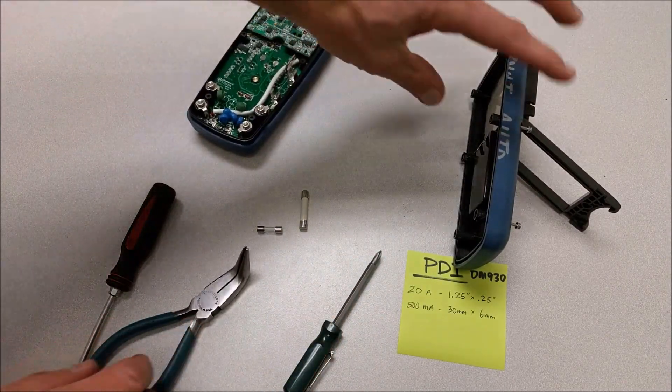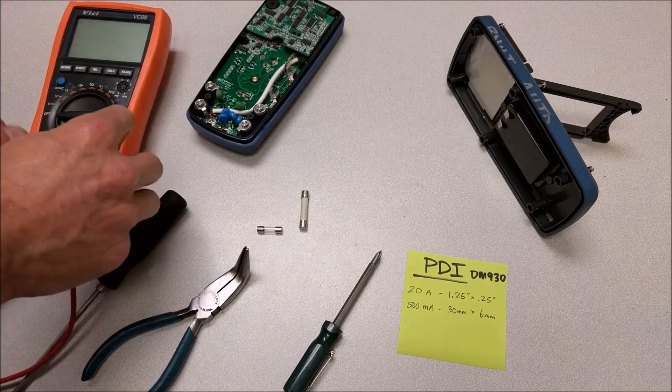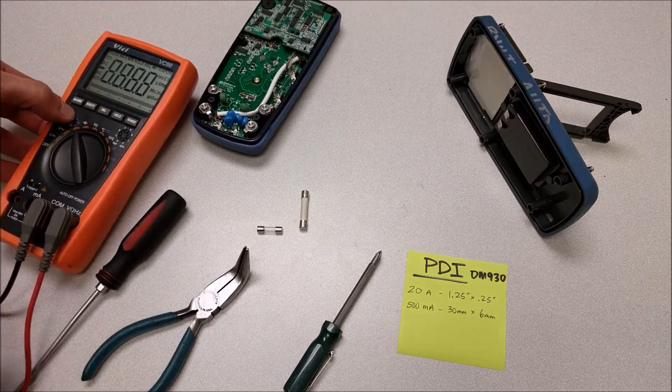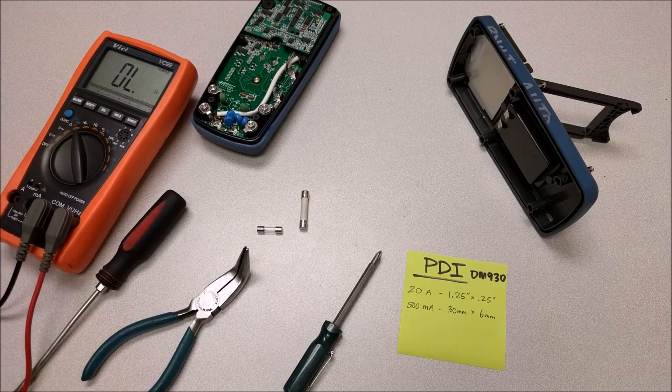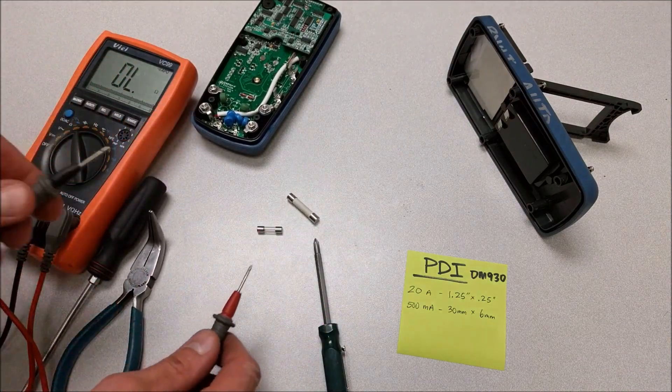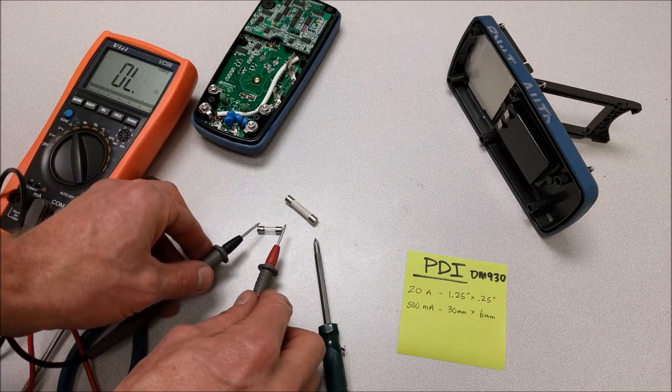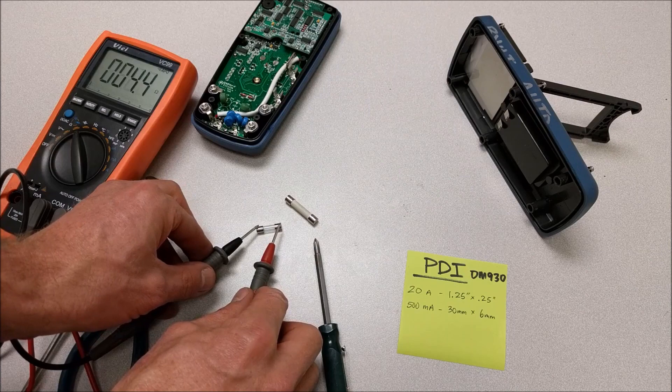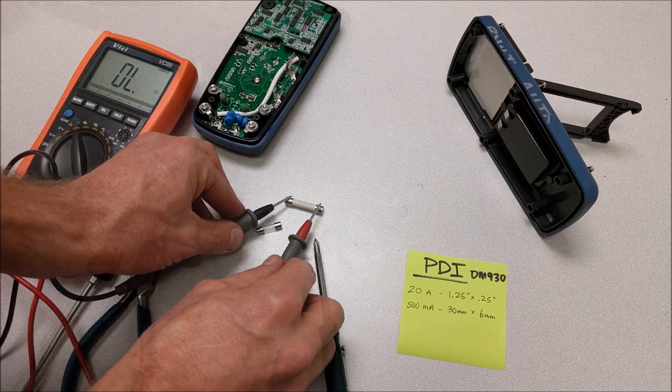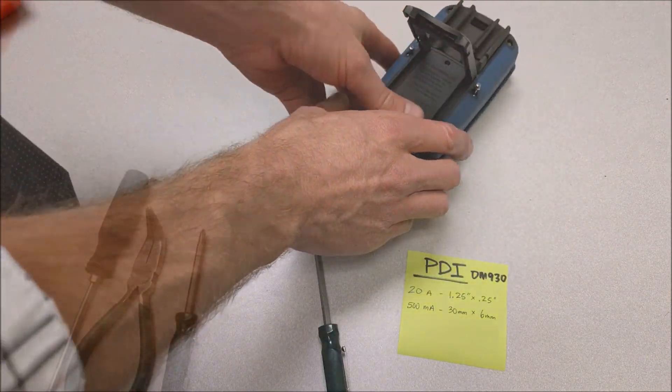Pull these out like this. And by the way, this is a great opportunity if you still have another meter. Set it to the continuity setting. I can double check these fuses just to see if they're good or not. That fuse is okay, but this 20 amp fuse needs to be replaced. So I'll set this meter aside. I won't put it back together right now.